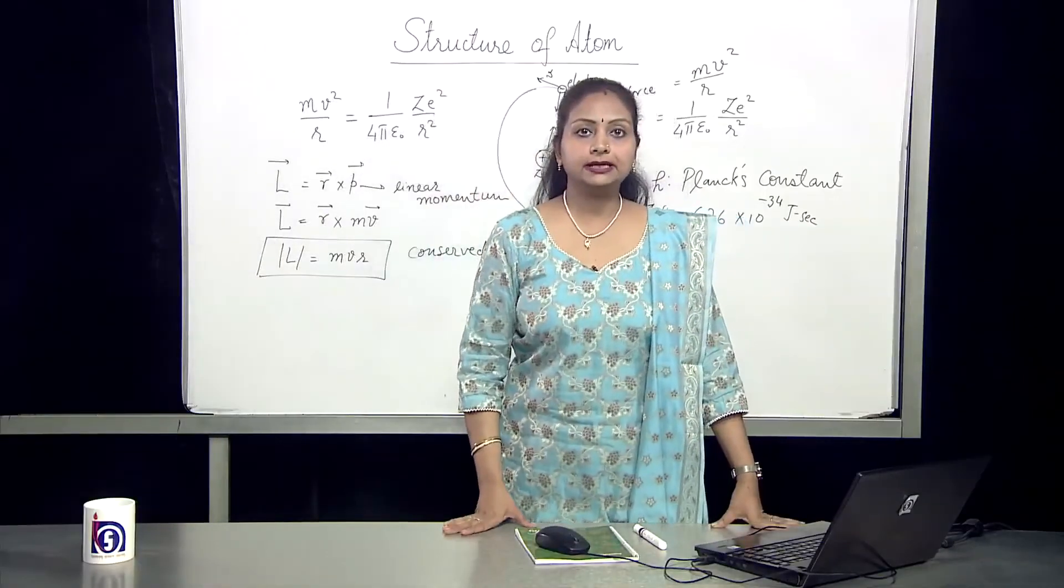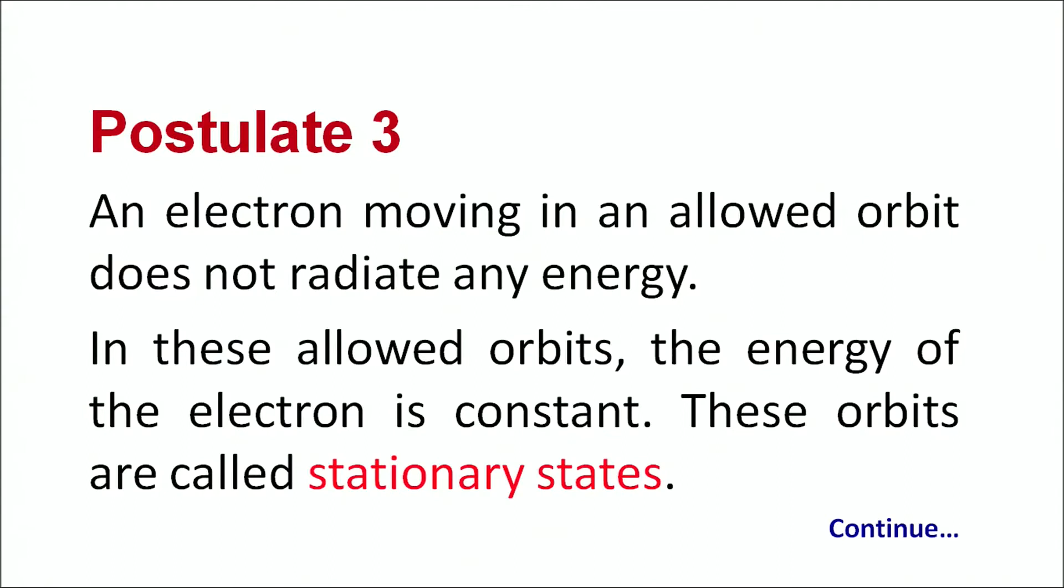The third postulate says that an electron moving in an allowed orbit does not radiate any energy. In these allowed orbits, the energy of the electron is constant. These orbits are called stationary orbits.